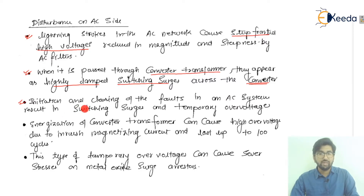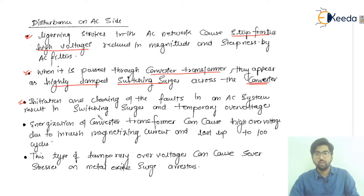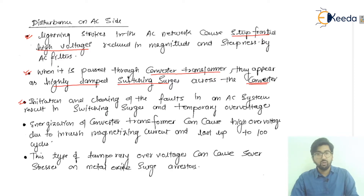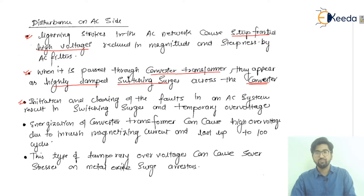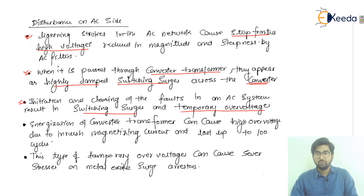The fault clearing process generates switching surges and temporary overvoltages. Temporary overvoltages are for a short duration of time. So to summarize: the first disturbance type is switching surges, and the second is temporary overvoltages.